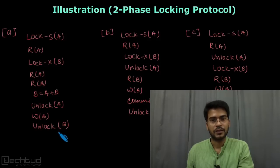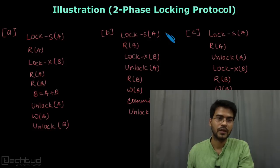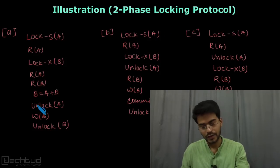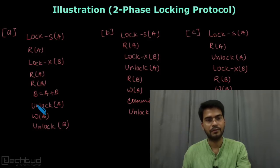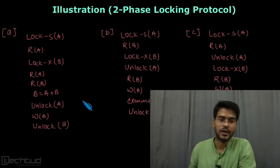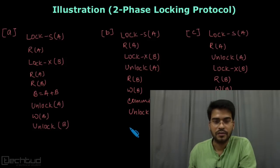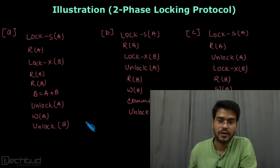Hello everyone, welcome to tech2.com. In this illustration we will solve a problem on two-phase locking protocol. We have various two-phase locking protocols: basic 2PL, conservative 2PL, strict 2PL, and rigorous 2PL. For each of the given transactions, we will check whether it is rigorous, strict, conservative, or basic.